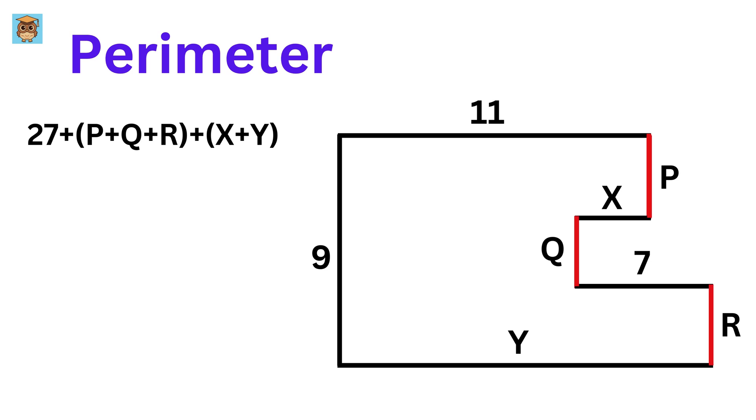Now, look at all these vertical sides. We can clearly notice that these three sides together make up this vertical side, and therefore we get P plus Q plus R equals 9, doesn't it? So, put it here. Therefore, the perimeter becomes this, or 36 plus X plus Y.